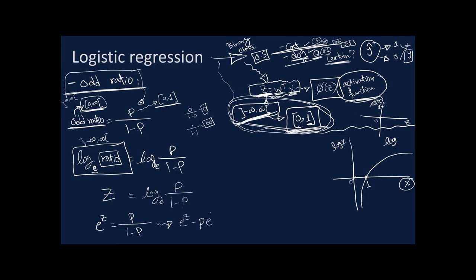From e^z − p·e^z = p, we bring terms together: e^z = p + p·e^z. Taking p as a common factor: e^z = p(1 + e^z). Therefore: p = e^z / (1 + e^z).